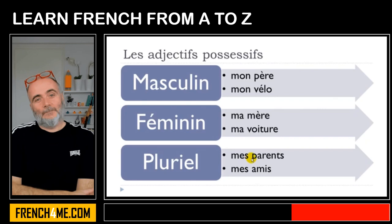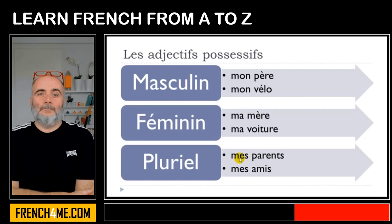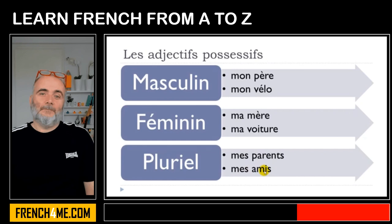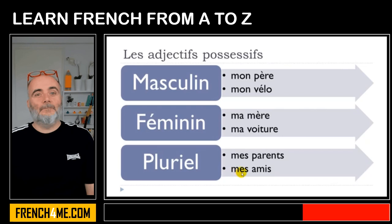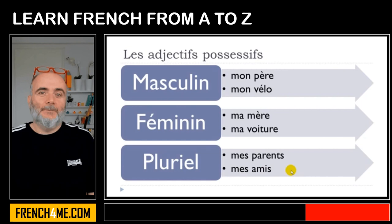For plural examples: parents — mes parents, because it's the plural form. And ami means friend, so friends in the plural is mes amis. Notice the liaison: mes amis.